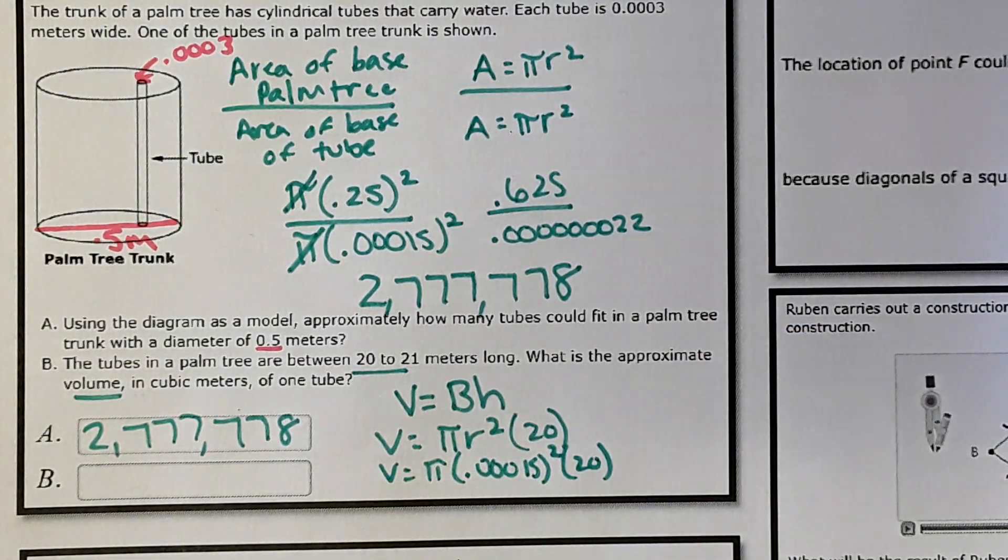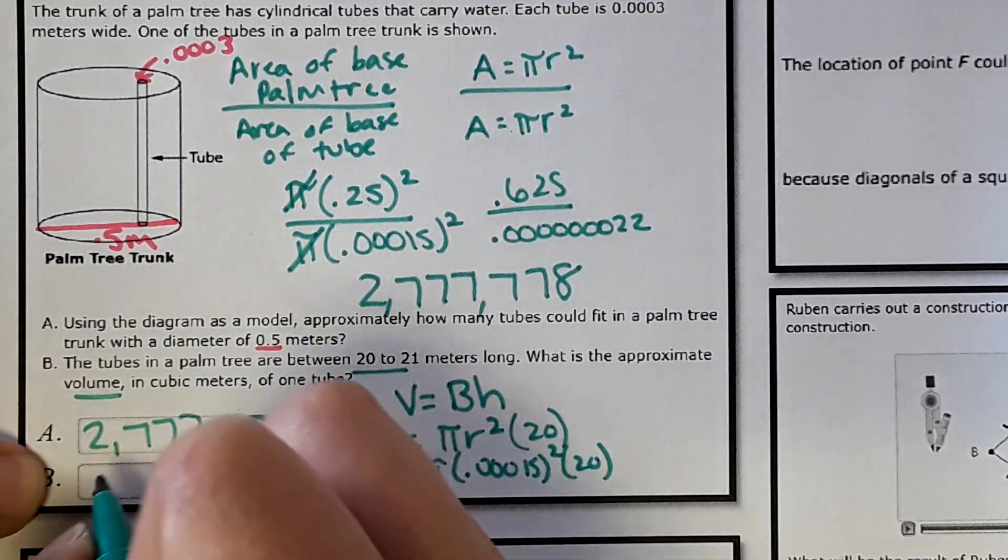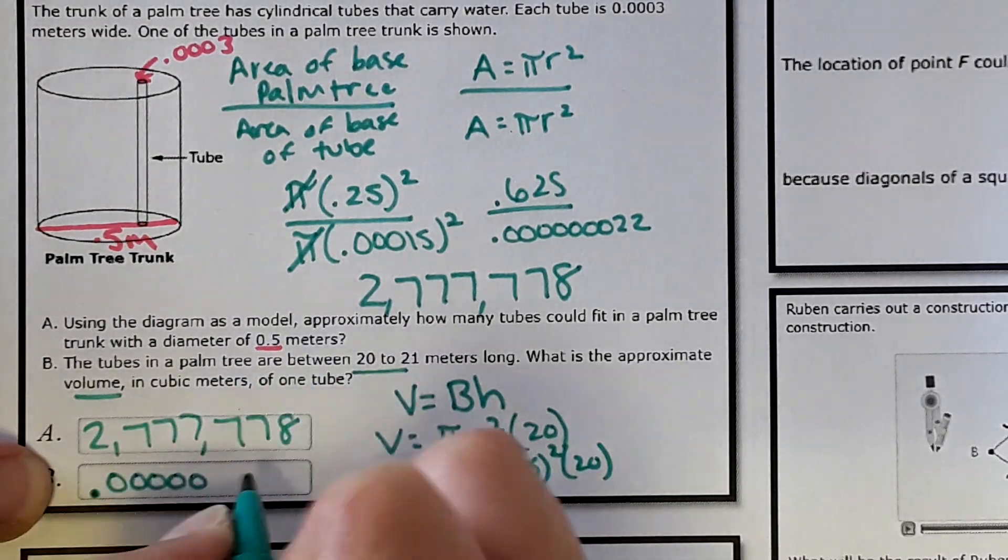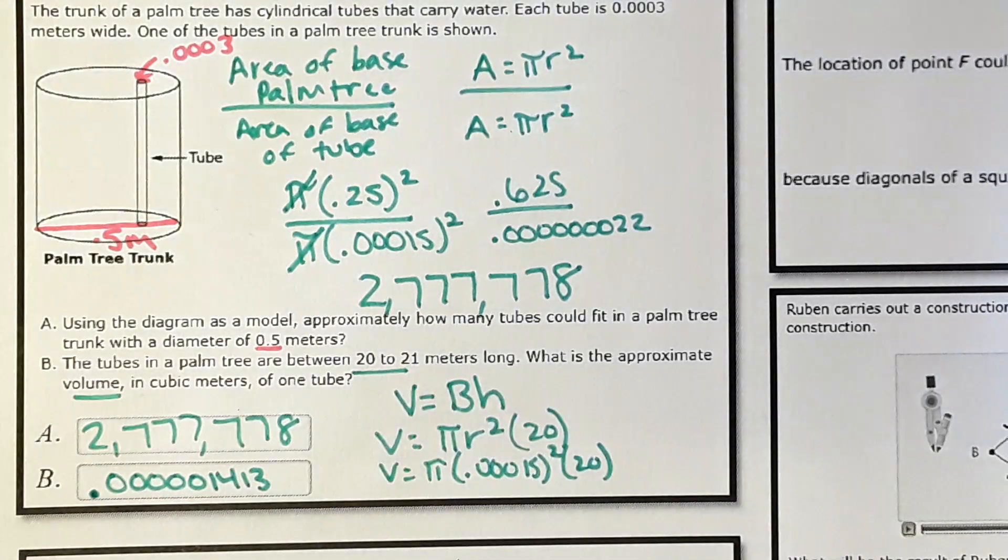You plug all this into a calculator and it comes out to, it's five zeros here. 1, 2, 3, 4, 5. 1, 4, 1, 3. Well, that was fun.